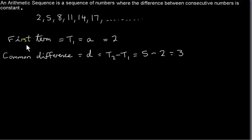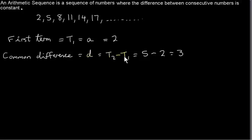There are two important parameters that we need to define an arithmetic sequence. We need the first term, or T1, which is also called a (small letter a), and for this sequence it is 2. We also need what's called a common difference — that is the difference between any two consecutive terms, given the letter d. To find d, we just take any term and subtract the previous term. So if we take T2 and subtract T1, we'll get the common difference d, which is 3.